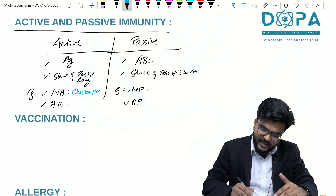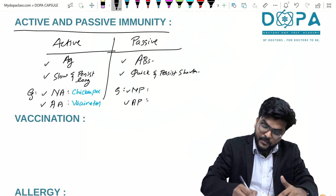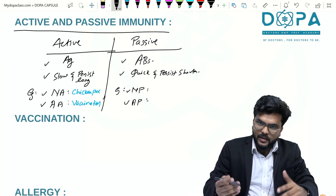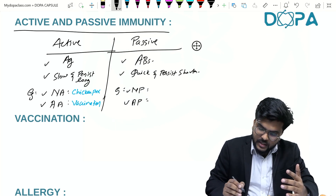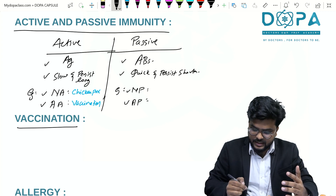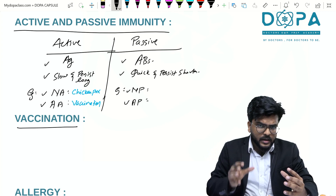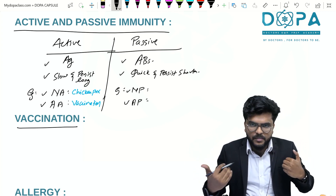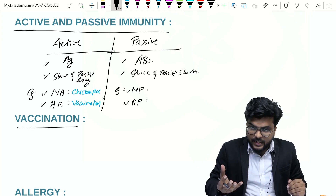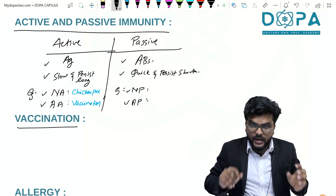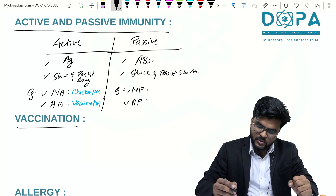A very good example of artificial active immunity is vaccination. In vaccination, ready-made killed or inactivated antigens are administered into the body so that our body will recognize them. The second time, if the actual infective antigen comes, our body will be well equipped to act against it, and we will be protected for a long period of time.